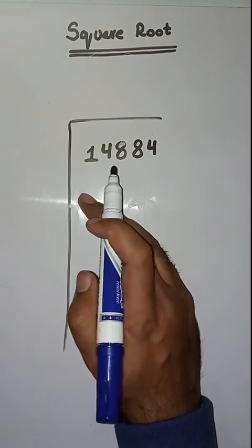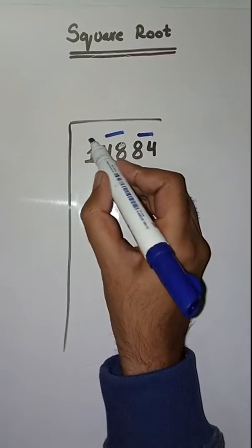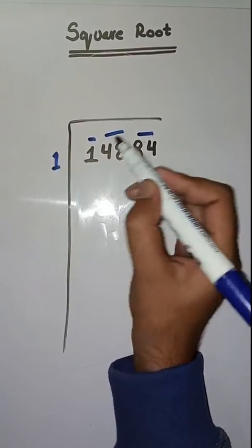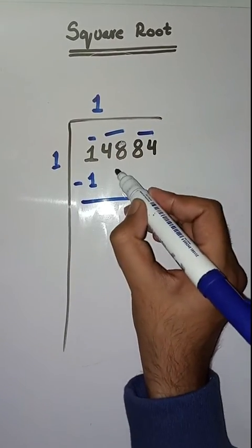So today what we do, first we have to make pairs from right to left like this: 84 one pair, 48 second, and then one. So first we have to solve one. We take a number, one ones are one, minus karenge, hamare paas aayega zero. Next pair is 48.